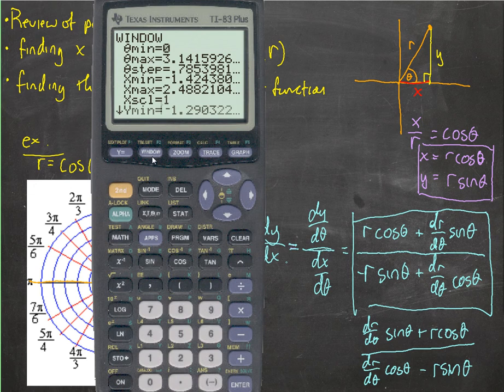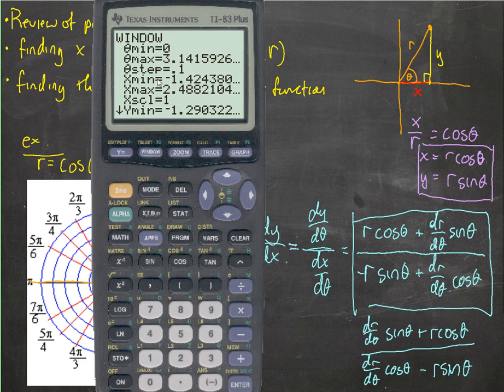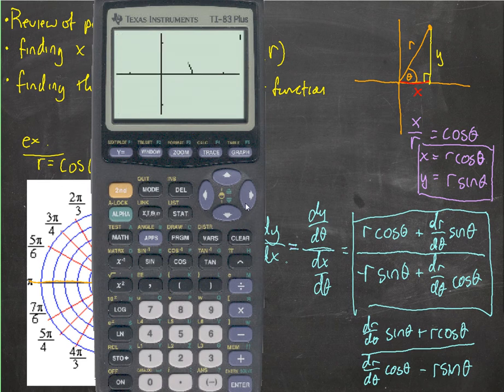So you get the idea of what a step is. We'll make this step kind of small, but not too small. You saw what I did. It slowed it way down when I made it too small. And then the x minimum, that's the x-axis from negative, it looks like 1.4 to positive almost 2.5.